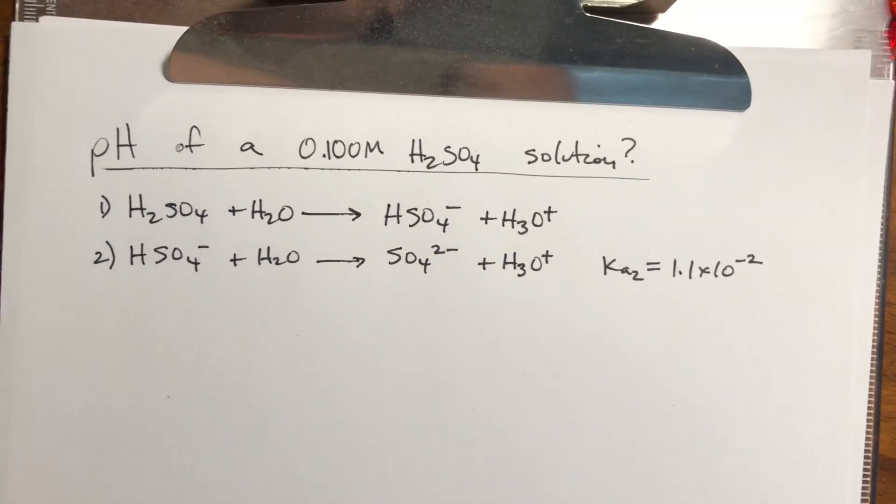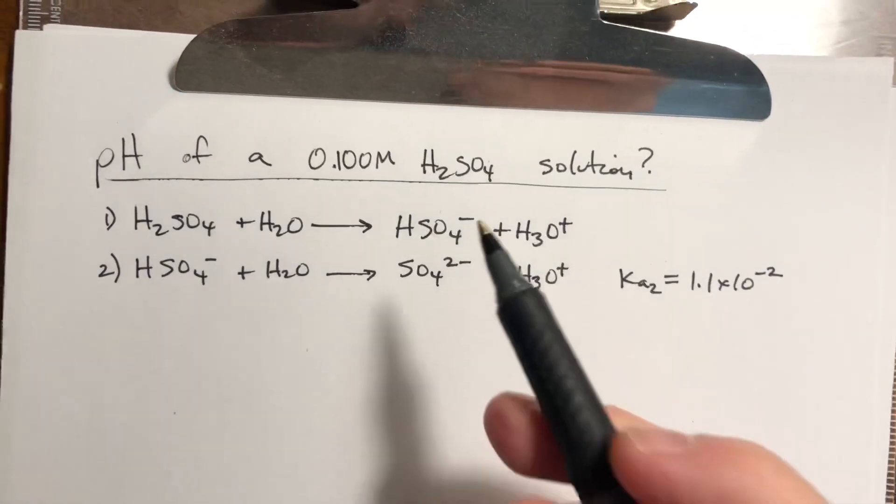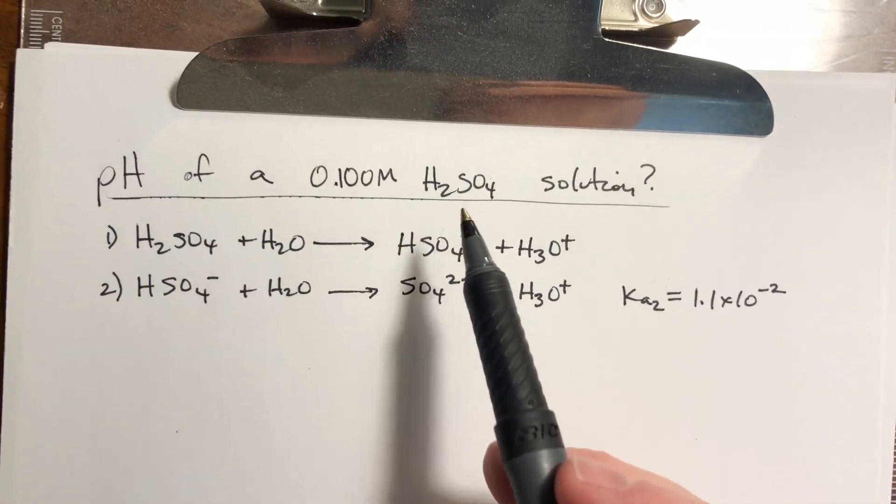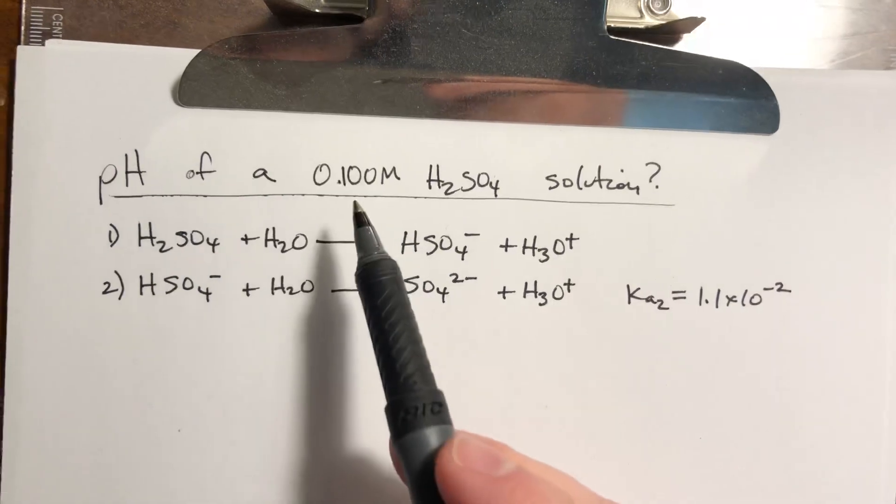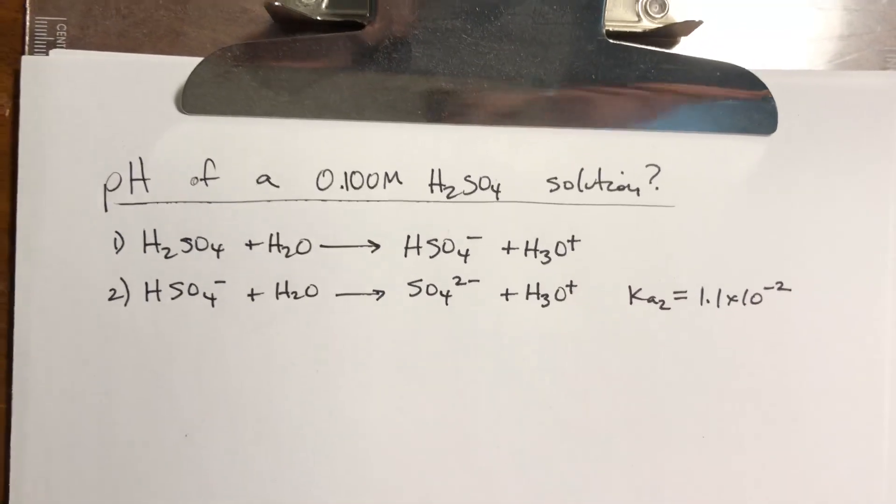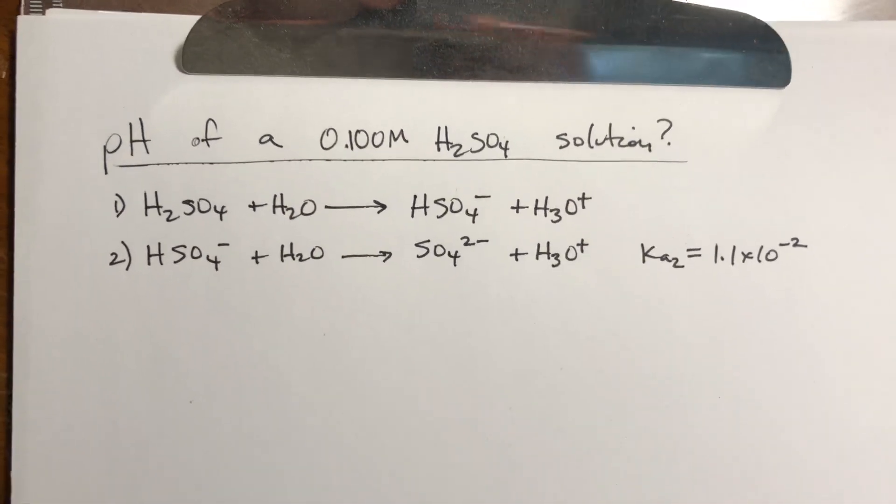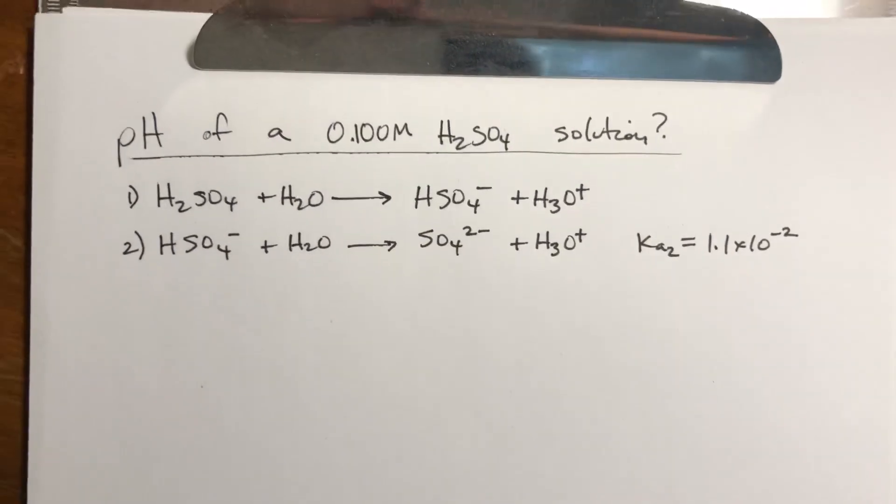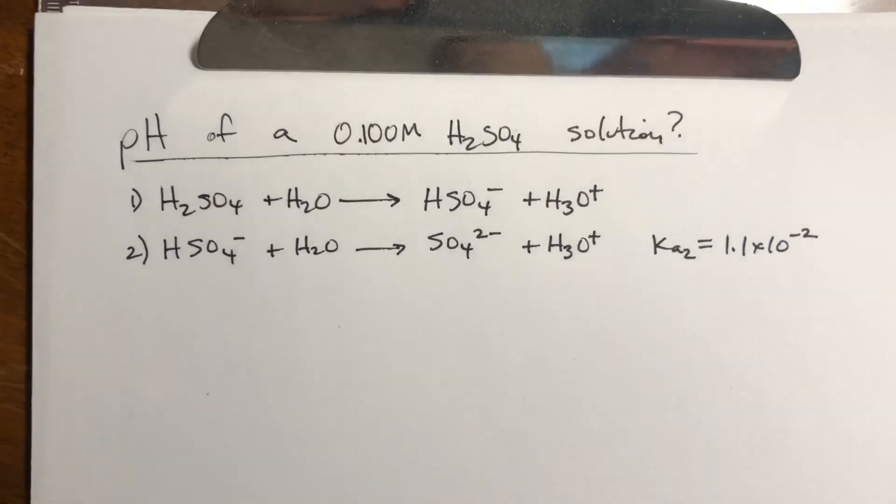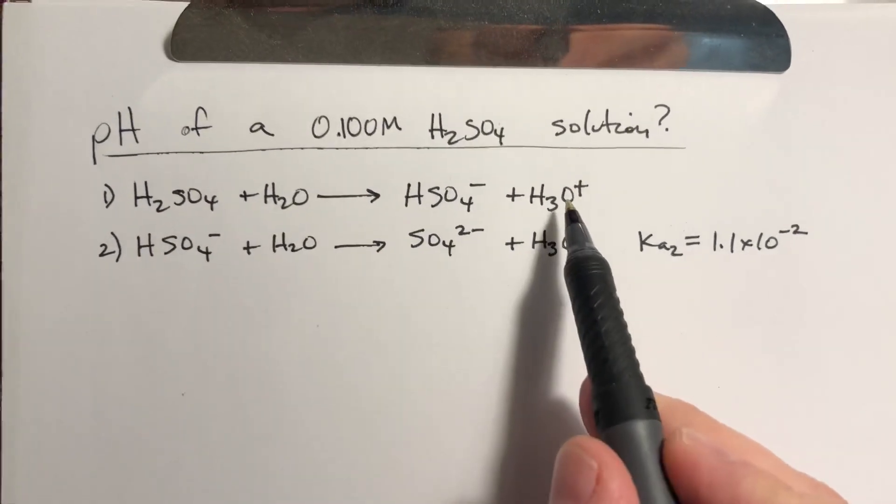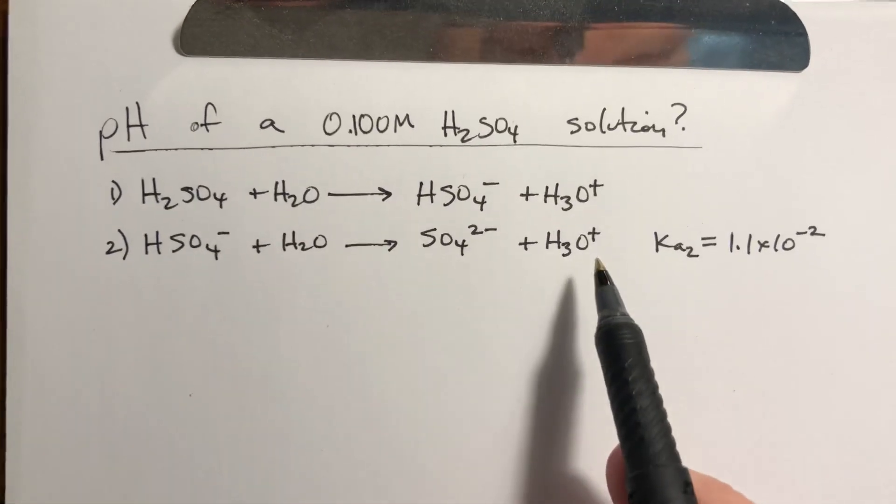I'm going to work through the example that is in the notes of how to calculate the pH of a sulfuric acid solution with a concentration of 0.1. That is between those two values of 0.001 and 0.5, which decide how you calculate it. This is the worst of the three options, it's option three, where essentially this first equivalent is going to go to completion and then we have to do an ICE method for the second part.